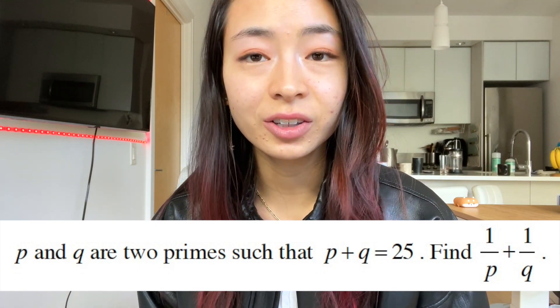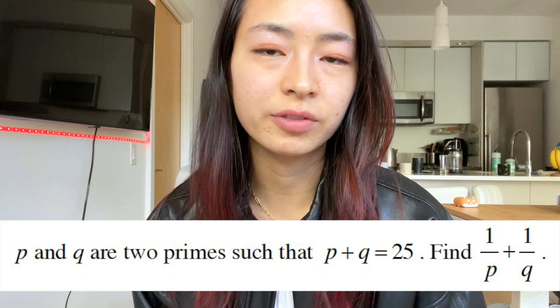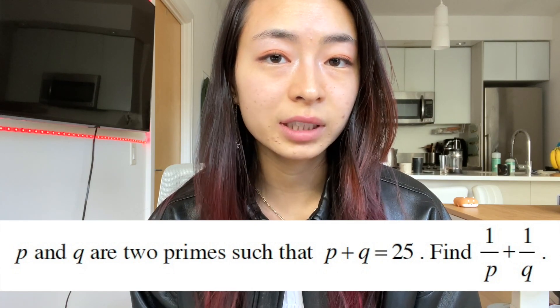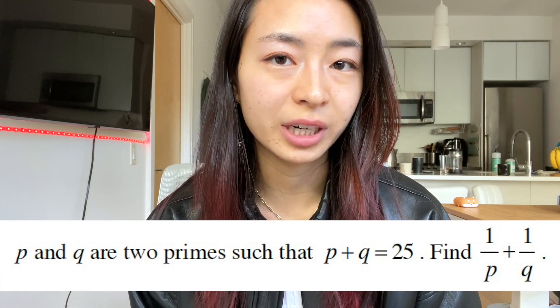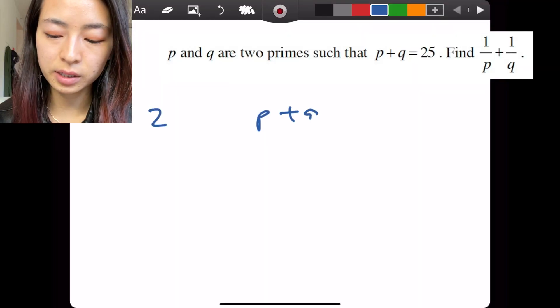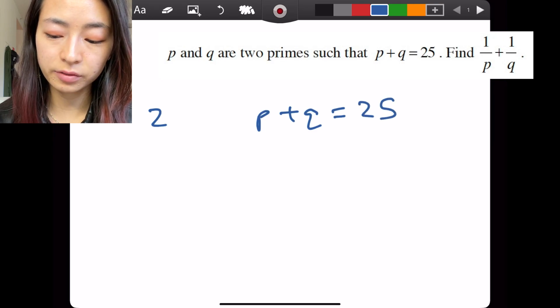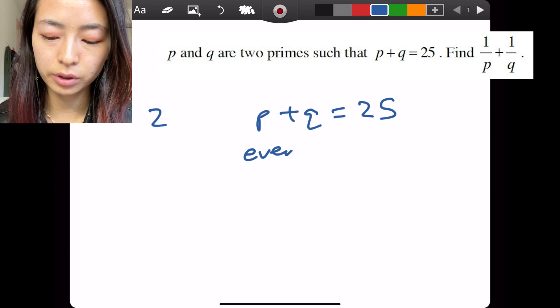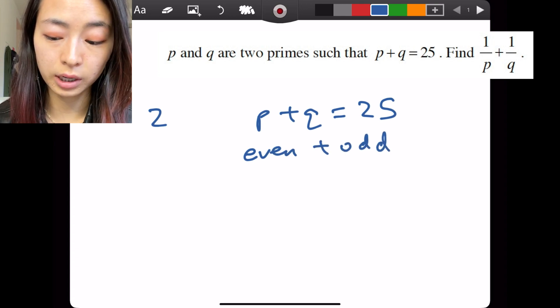Okay, so P plus Q equals 25, right? But what do you know about prime numbers? There is only one even prime number and that's 2.